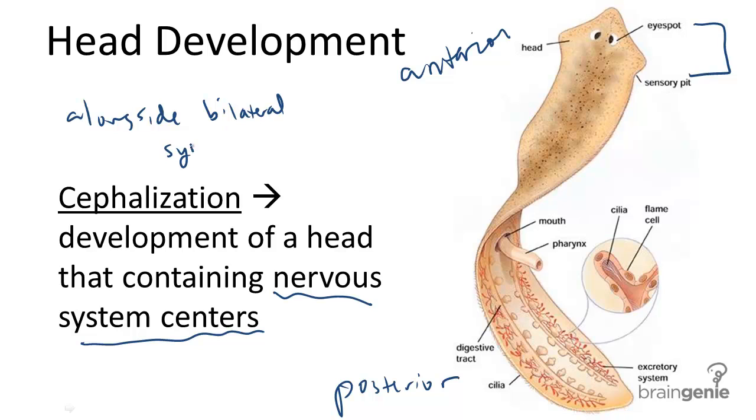The first organisms to develop the head were the flatworms, because before the time of the flatworms, other organisms like the sponges or cnidarians lacked a cephalic center.